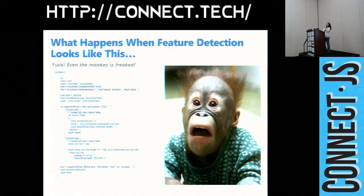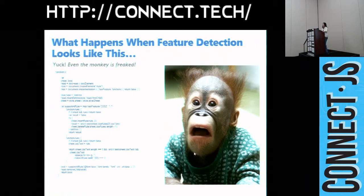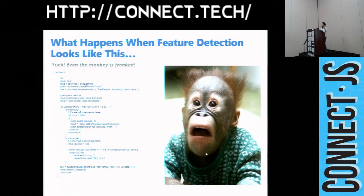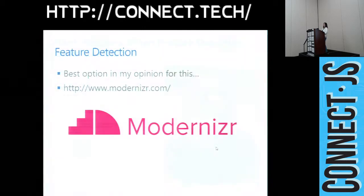Everybody agrees feature detection is a better way of doing things. This is a piece of code I used in the past to do feature detection — it's working, but it looks pretty complex. You're not supposed to read all the code — even a monkey would freak out. So next I want to introduce you to a much better tool — probably the best tool — to do feature detection. It's called Modernizr.